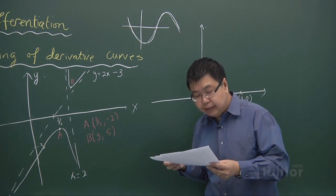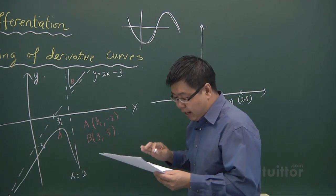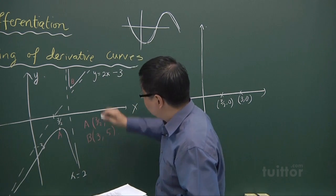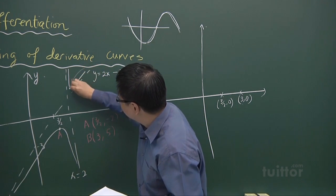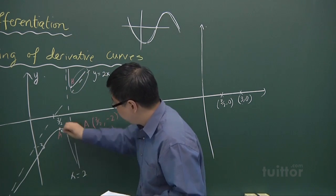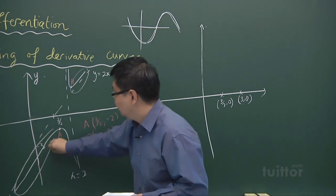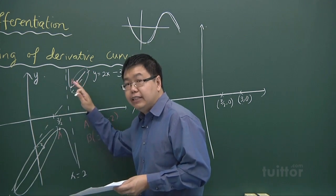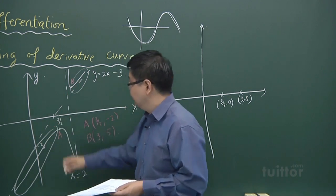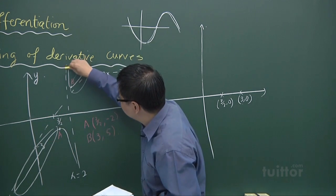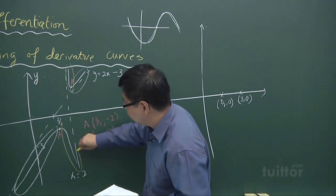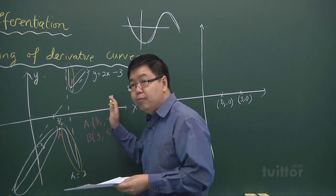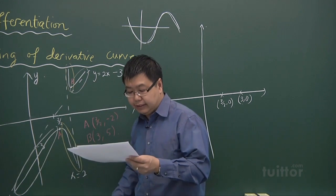Then how about the gradient function? The gradient of y equals f(x) being positive means that f'(x) is above the x-axis. So the parts of the graph with positive gradient mean that f'(x) will be above the x-axis. Whereas the parts of the graph with negative gradient mean that f'(x) will be below the x-axis.